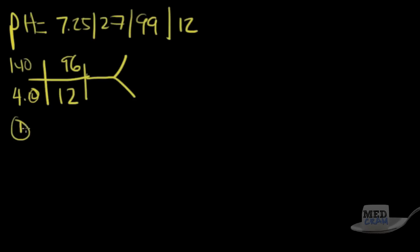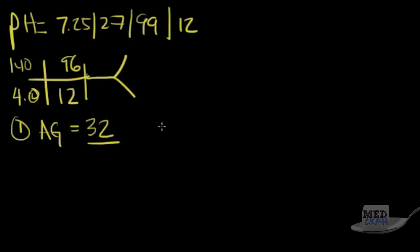The first step is to calculate the anion gap. We add the chloride and bicarb together and subtract from sodium: 96 plus 12 is 108, and 140 minus 108 equals 32. That's definitely an anion gap, so we immediately know we have an anion gap metabolic acidosis.